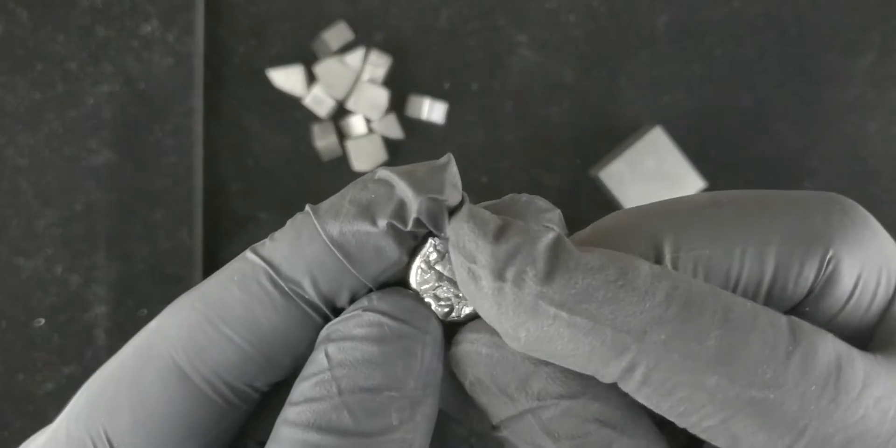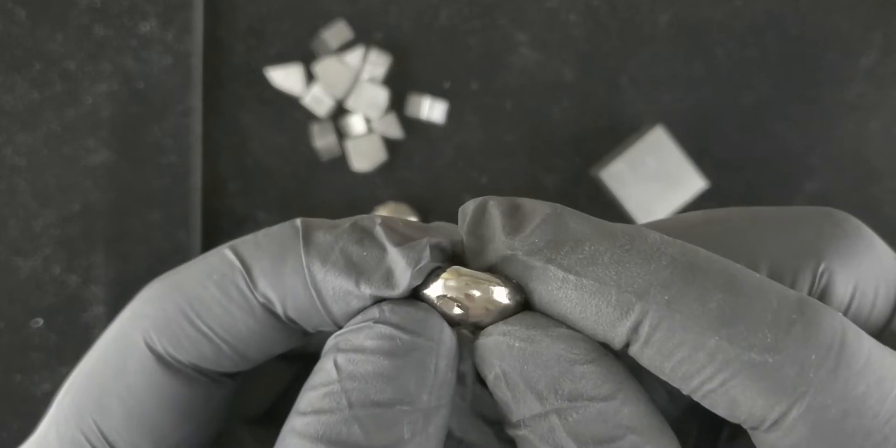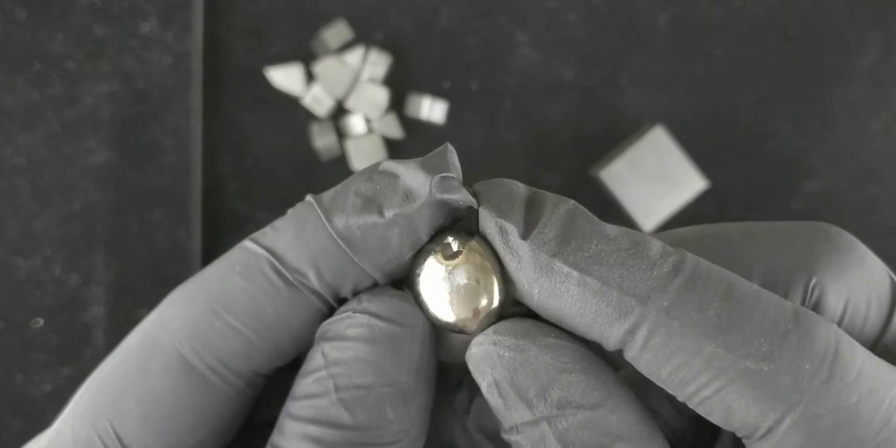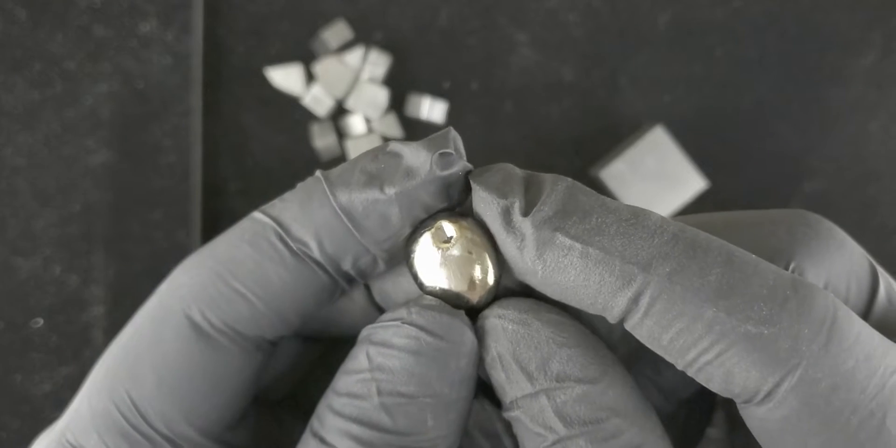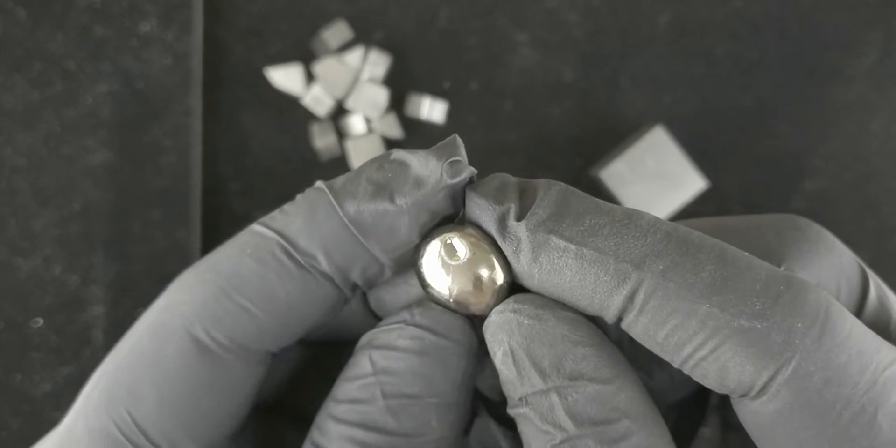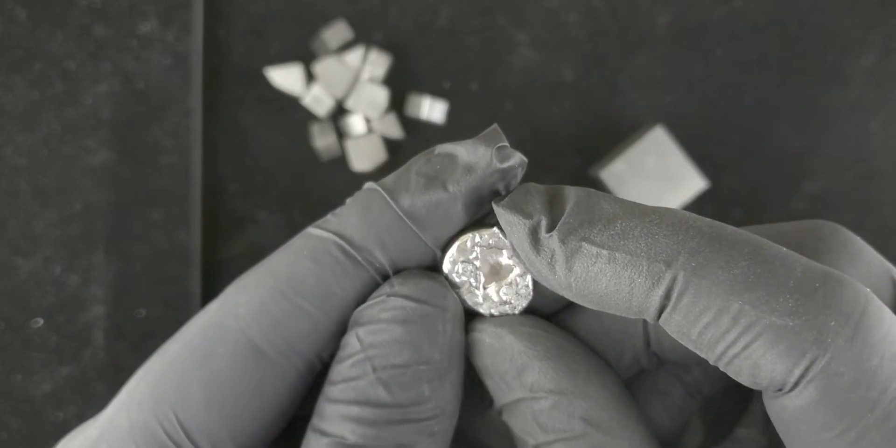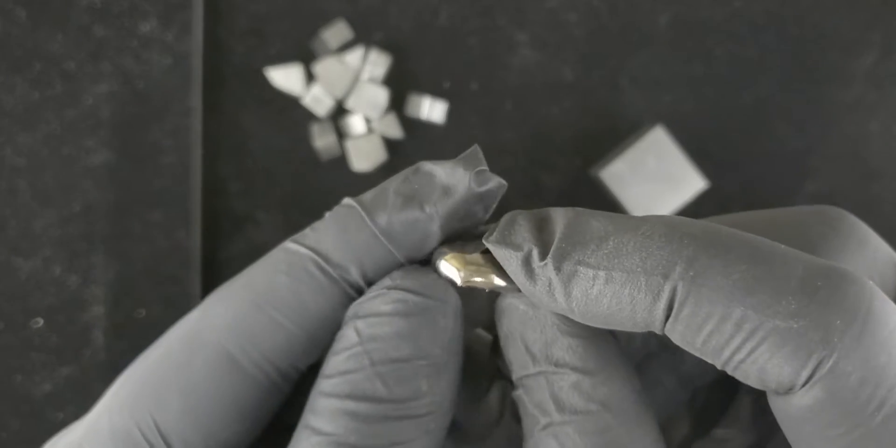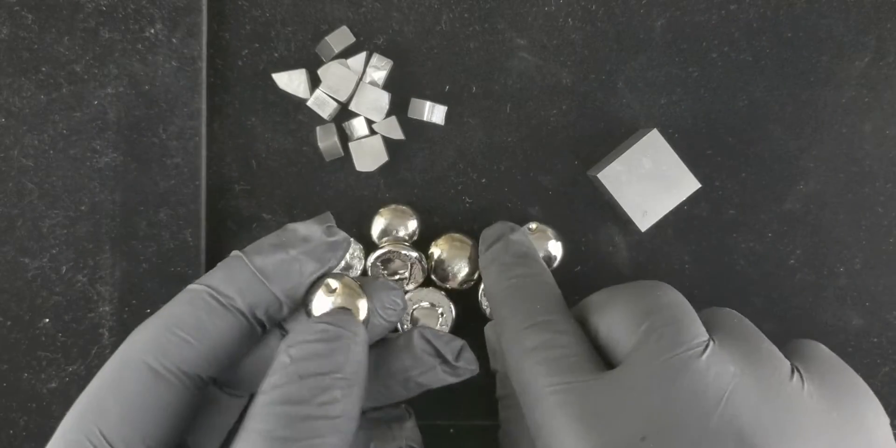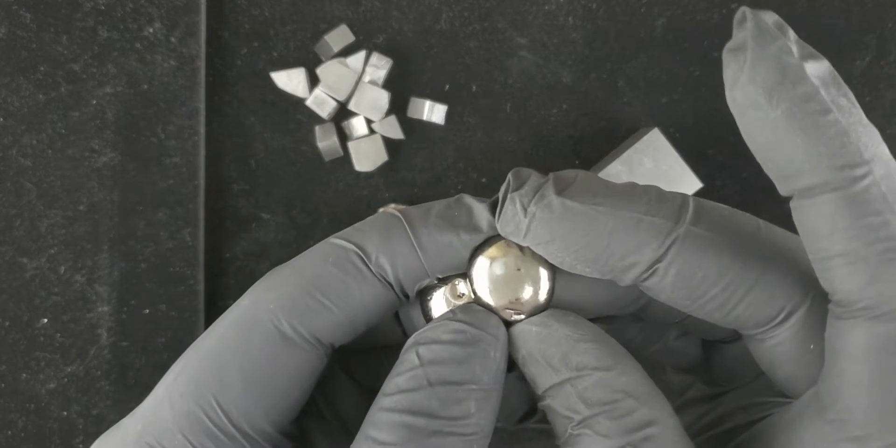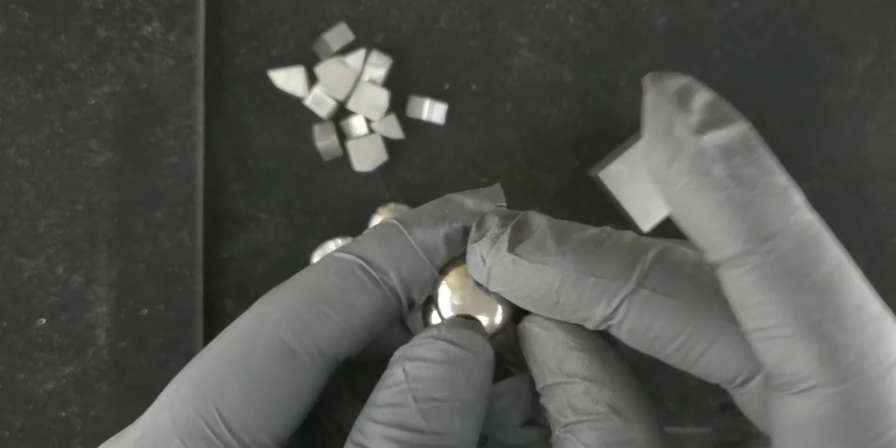You can see these beads here. These are made in a vacuum furnace. Basically they put a bunch of powder in a mold, take the air out of it, and then they zap it for all it's worth and you end up with these beads of very high density, very pure hafnium.